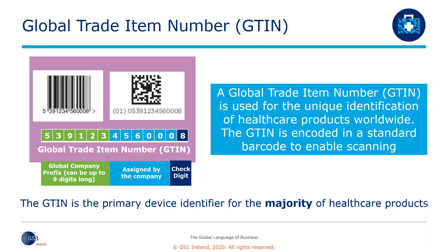GTINs are now used across all industries as the de facto standard for product identification. You may be used to seeing and scanning barcodes through your work already. On the left of the purple box you can see a linear barcode with 13 digits — an example of a GTIN encoded in an EAN-13 barcode. To the right is the same GTIN encoded into a GS1 Data Matrix, which is becoming the more common barcode type used in healthcare. The GTIN can be represented in either form, but its meaning is the same.